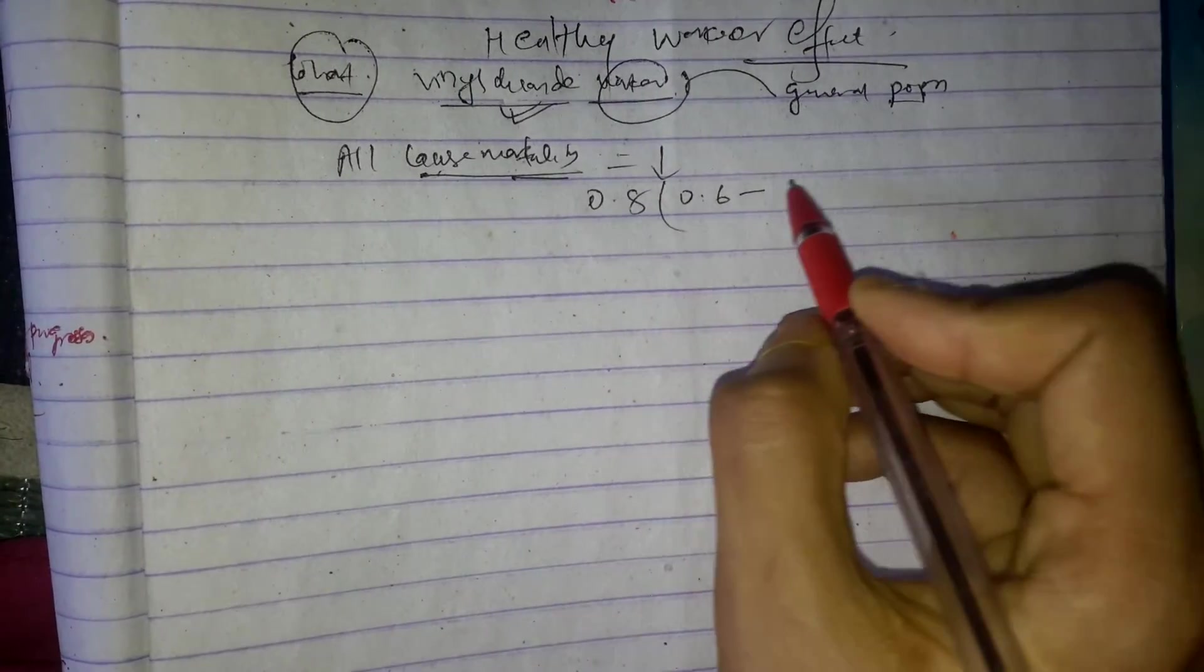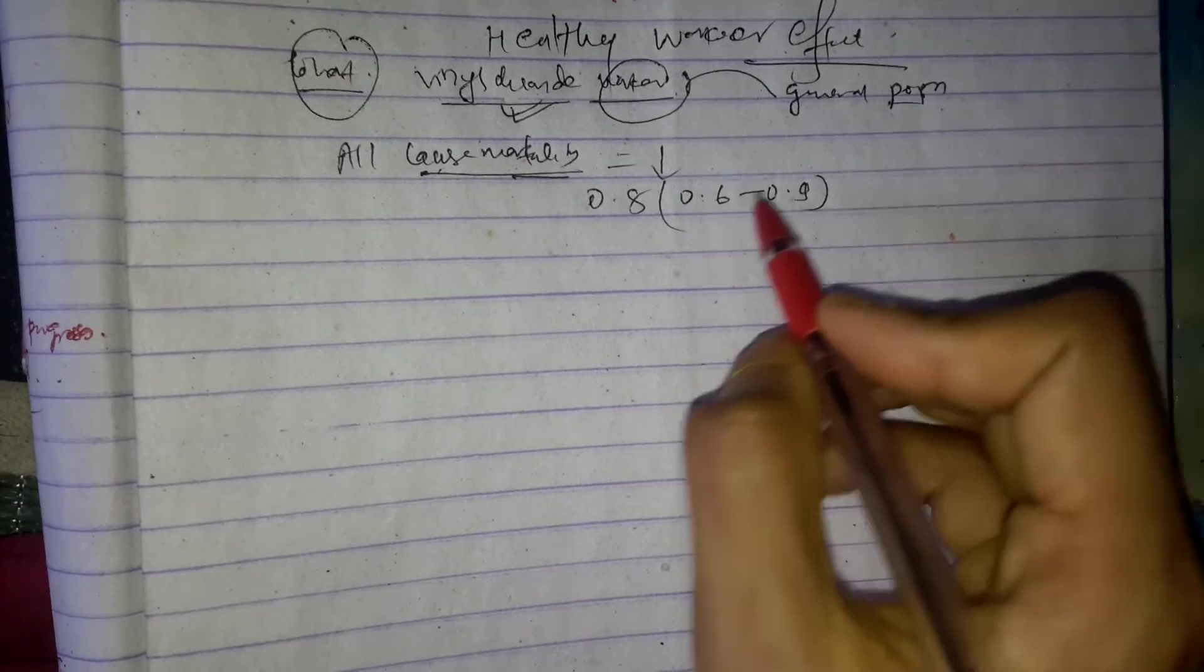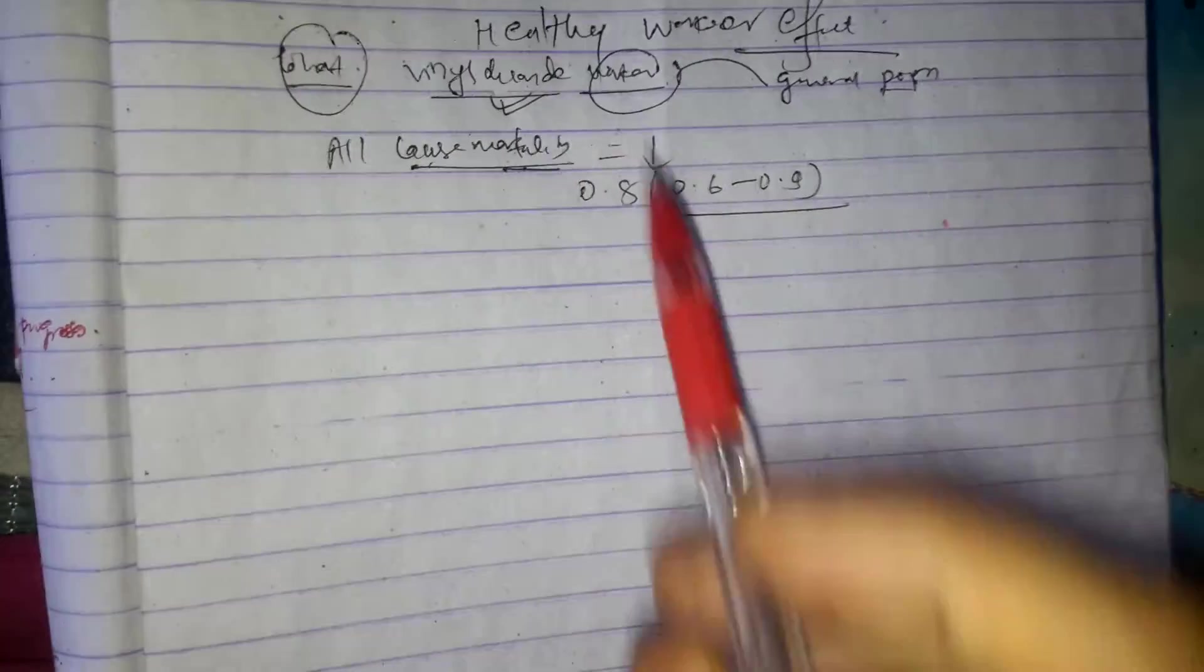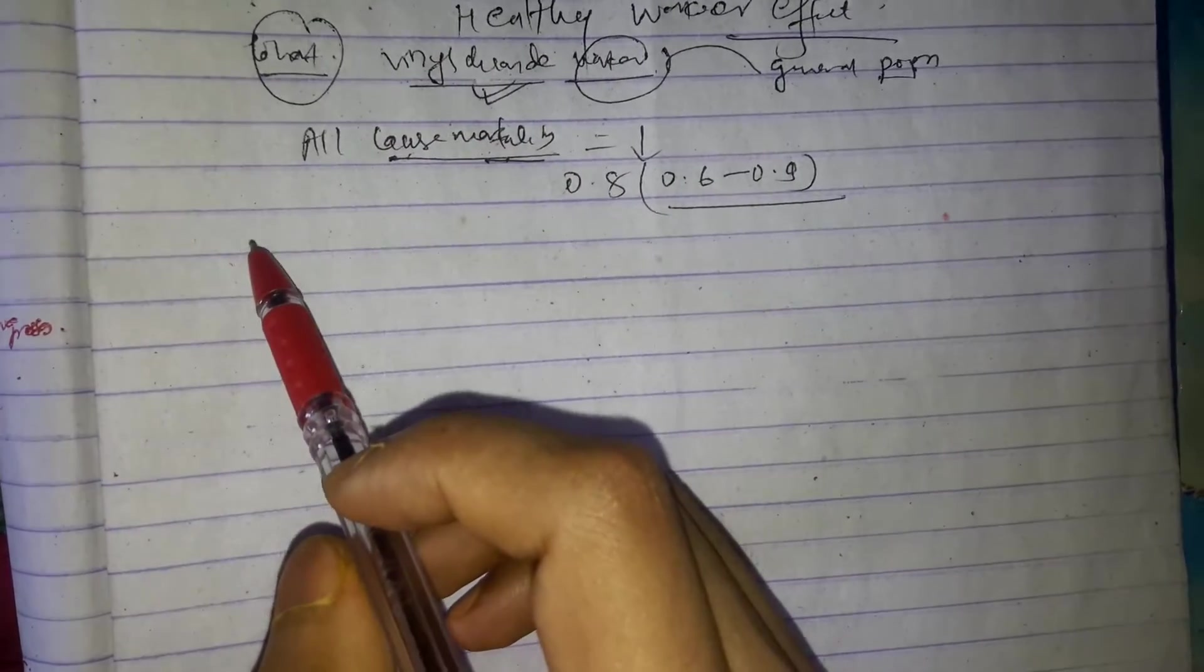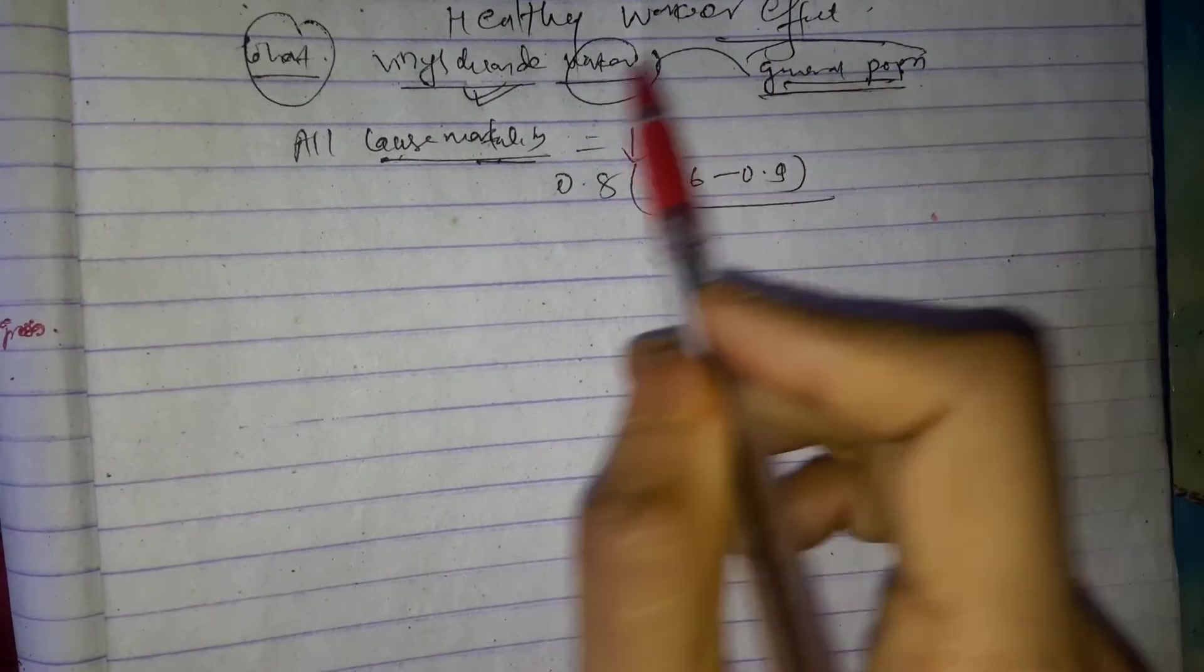Let's say it was 0.8 and confidence interval was 0.6 to 0.9. Let's suppose this is all cause mortality. So do you see any flaw in this study design? It has taken general population, so should these workers be compared to general population?